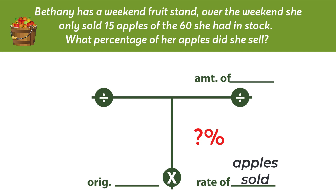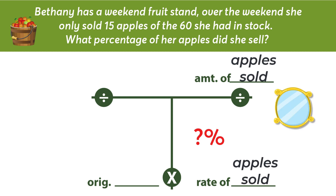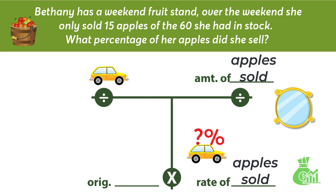Step three is to label the top spot, or the part, which is the amount of the rate — the amount of apples sold. Remember, step two and step three are mirrors of each other. The bottom says rate of apples sold, and the top is amount or number of apples sold. If the bottom was rate of people who like yellow cars, then the top would read amount or number of people who like yellow cars. If the bottom was rate of profit, then the top would be the amount of profit. Remember, it is a mirror, and the fill-in-the-blank on the top will always match what is written on the bottom.